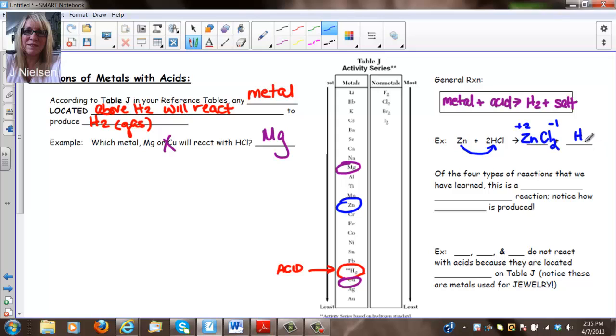And you cannot just write hydrogen, you must write H2 because H is part of BrINCleHOF and any time we write one of those elements by themselves, they form a molecule, and it's written as H2, I2, F2, etc. Now let's see if our equation is balanced. It's not, we have two Cls here. Oh they did have a two there, two Cls, two Hs, two Hs. So we're good, it's balanced. Of the four types of reactions that we've learned, this is a single replacement reaction, which we've already done these. Notice how hydrogen gas is produced.